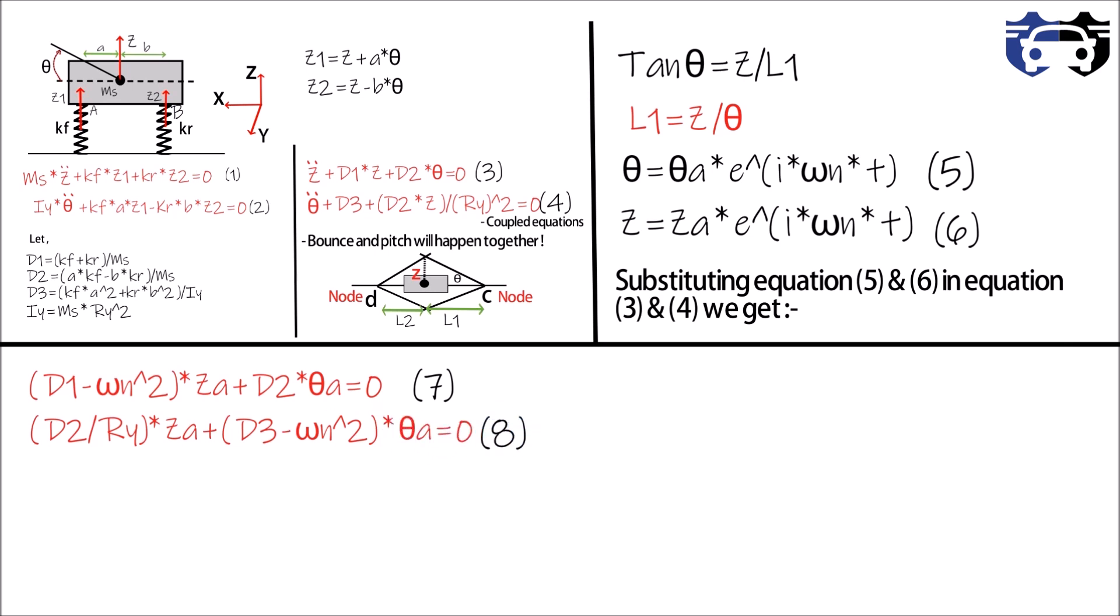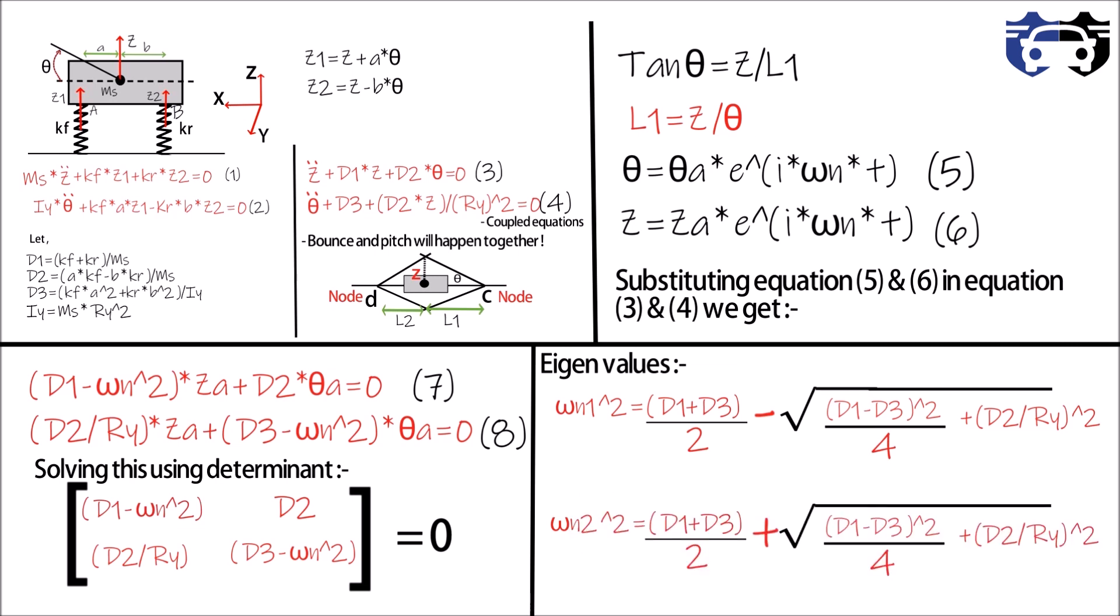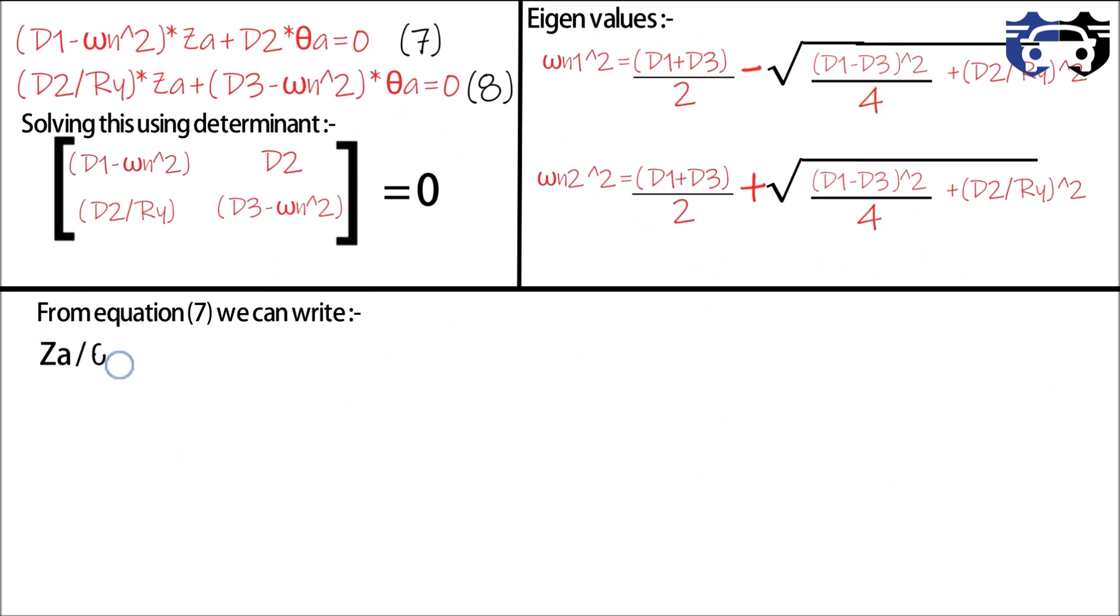And D2 divided by Ry multiply by z a plus D3 minus omega n square, whole multiply by theta a. This is our equation eight. Now I'm going to find the eigenvalues of these two equations using determinant. So you can write the following determinant. For this we get the following values of omega n1 square and omega n2 square. From equation seven we can write z a divided by theta equals to D2 divided by omega n square minus one.